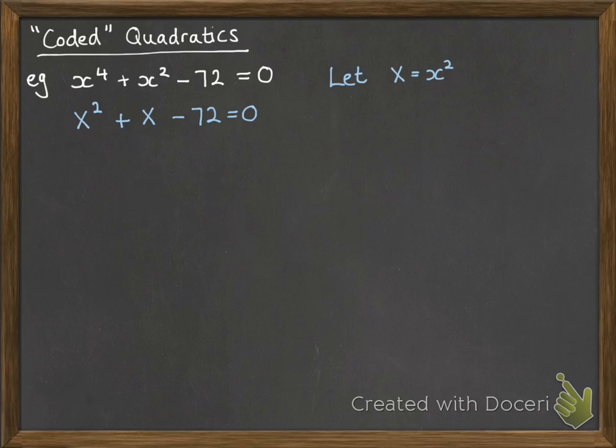Now, that is much easier to spot as an ordinary quadratic that we can factorize. So plus 9 and minus 8, that multiplies to give negative 72 and adds to make a 1x.